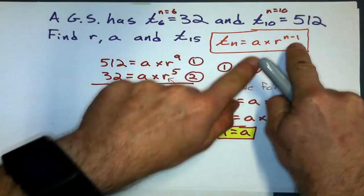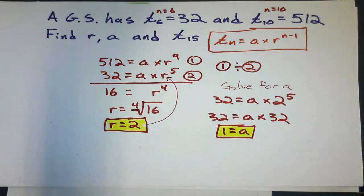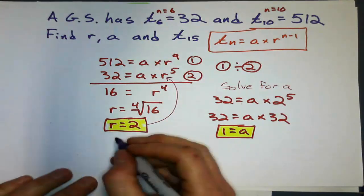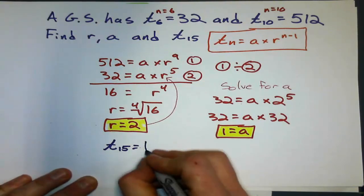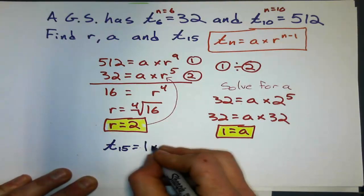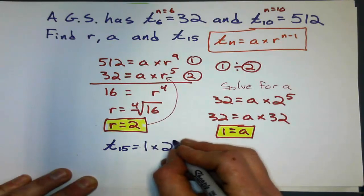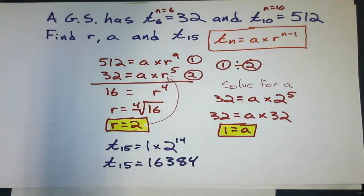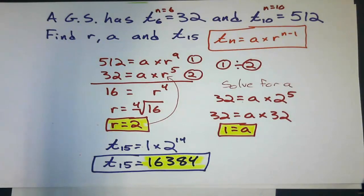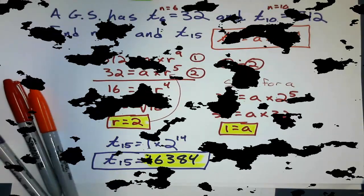Alright. Well, I've got these. I can substitute them in there to find the 15th term, and I'm in business. So the 15th term is the first term, 1, times the common ratio, 2, to n minus 1, which is 14. 16,384. How does that look? Alright. We can do these. We can do them.